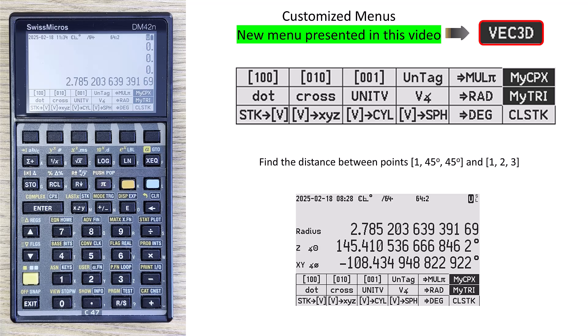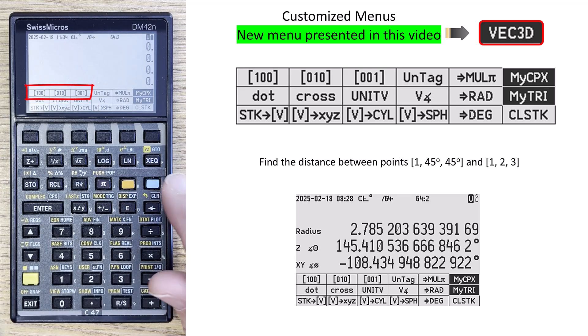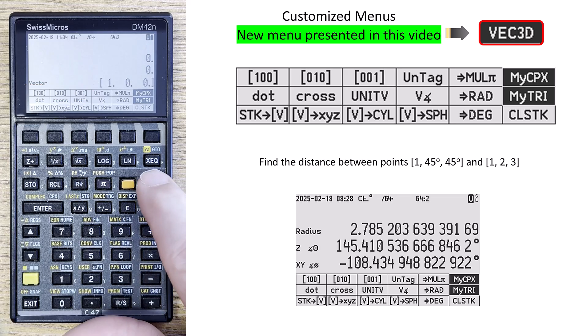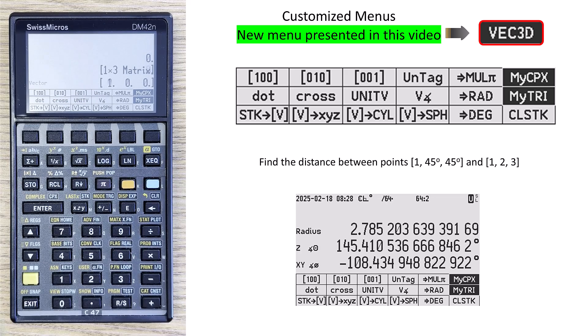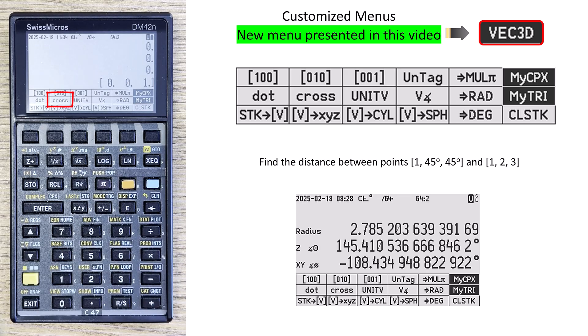And now I'll just show a couple other features in here, and then I'll end this video. Let's clear the stack. I put unit vectors in the G-shift on top row. So I could take the unit vector for X, and the unit vector for Y. And if I cross these two vectors, then I get the unit vector for Z. So X cross Y equals Z.